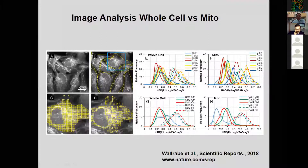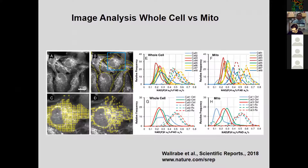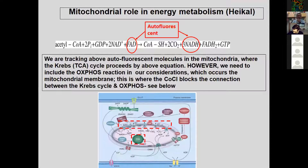We can clearly see the whole cell and the mitochondrial area separately. We categorized the response with minimum, medium, and higher levels of the NADH signal and can clearly see the heterogeneous distribution of this signal monitored using this technique. To validate the technique, we use cobalt chloride, which blocks the connection between the Krebs cycle and OXPHOS, to test whether the technique is sensitive enough in measuring the redox ratio.